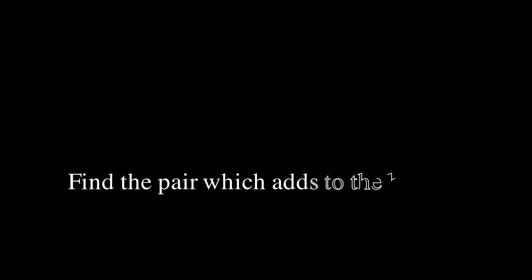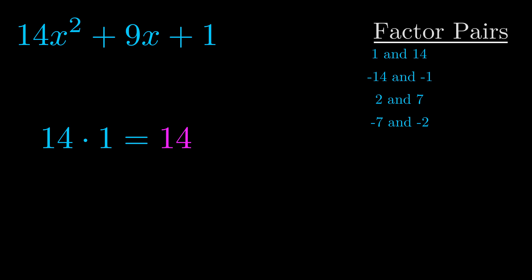The b value is the coefficient on the x term. That's the middle term, the one that we haven't done anything with yet. And really this is the only factor pair that we need.